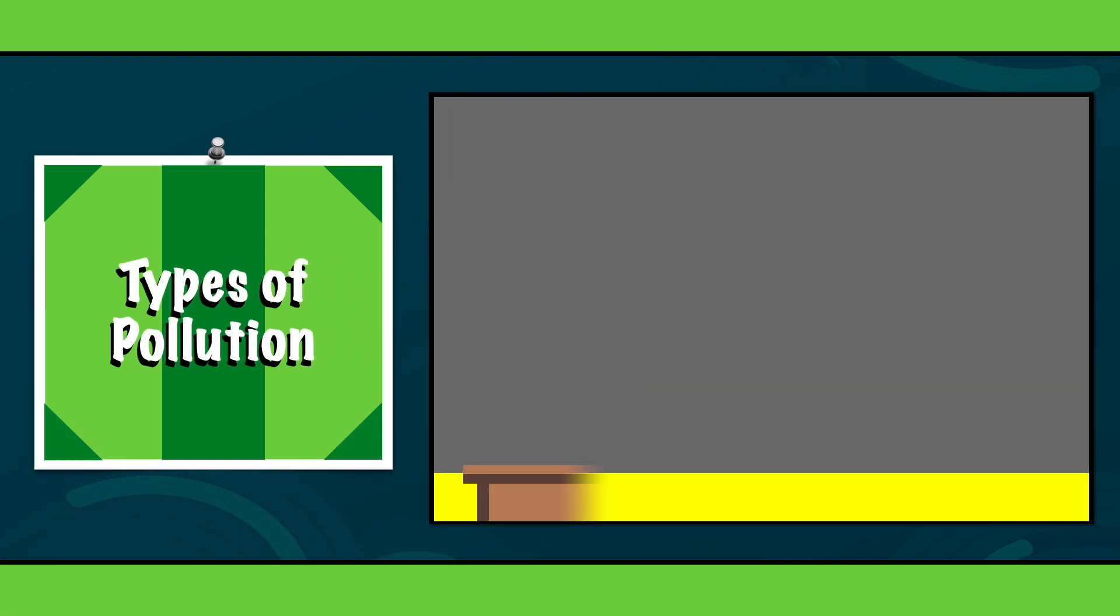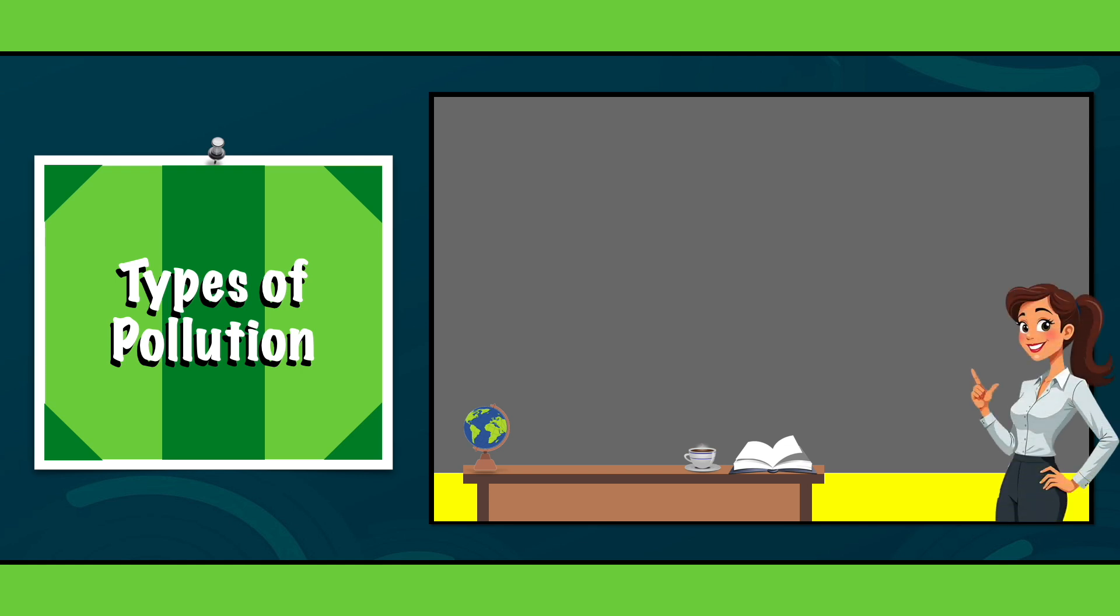There are several types of pollution that we need to be aware of, and each one impacts our planet in different ways. The most important are: 1. Air pollution.